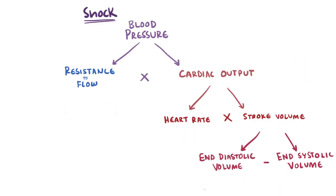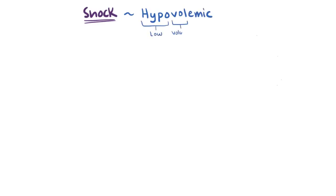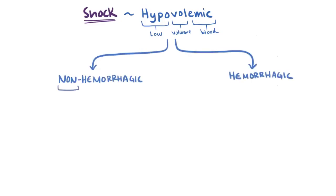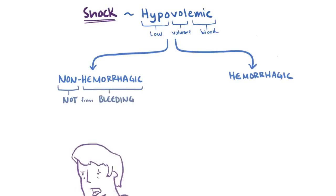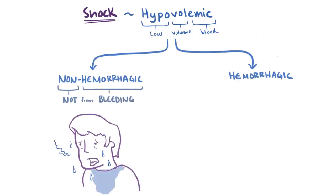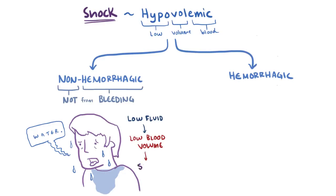Shock can be caused by a whole bunch of different things, but we can categorize the different types into three main categories, along with some subcategories. The first category is called hypovolemic shock. Hypo means low, vol refers to volume, and emia refers to the blood, so hypovolemic shock is shock induced by a low fluid volume of blood. This could be either non-hemorrhagic or hemorrhagic. Non-hemorrhagic means the loss of fluid volume isn't from bleeding — for example, if you were stranded in a desert and suffered severe dehydration.